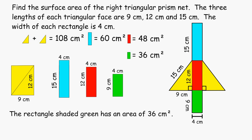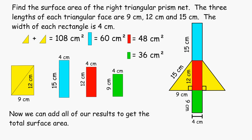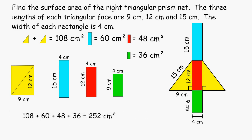Now we can add all of our results together to get the total surface area. If we add 108, 60, 48, and 36 square centimeters, that would give us a total of 252 square centimeters. So it would take 252 square centimeters to completely cover all five surfaces of our triangular prism.